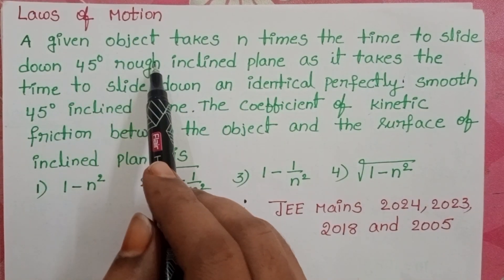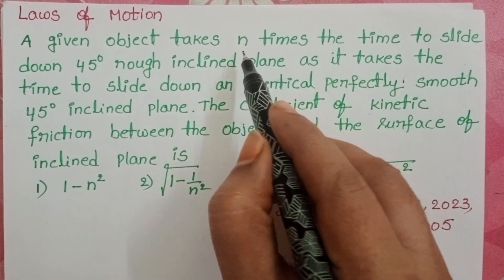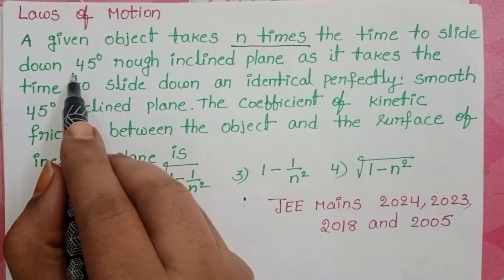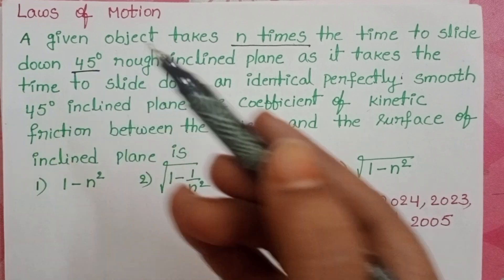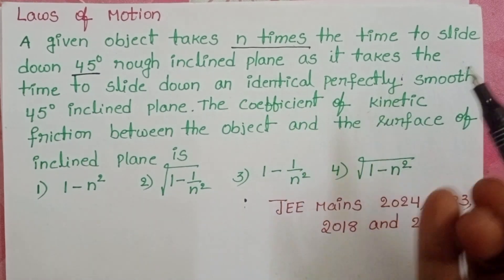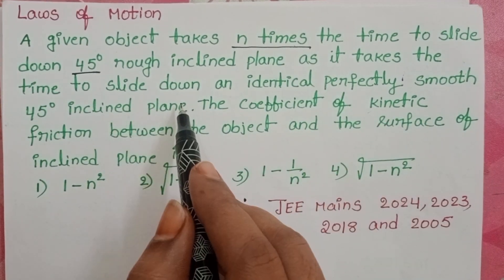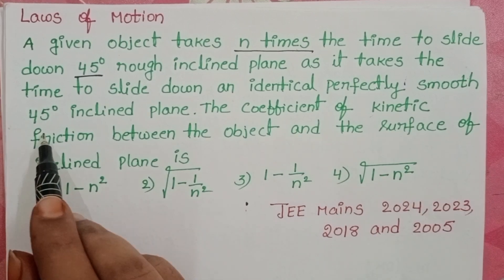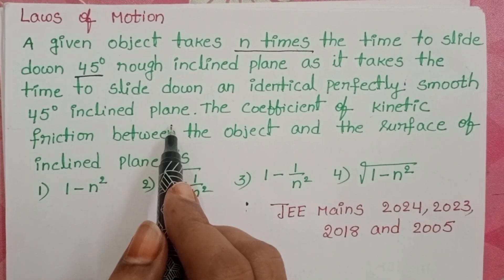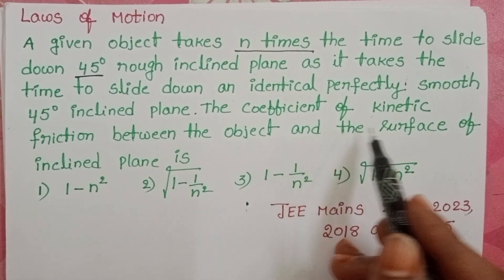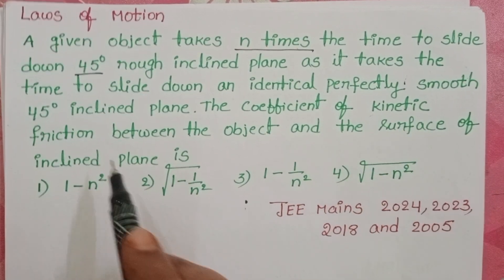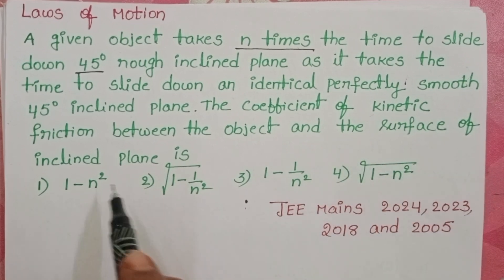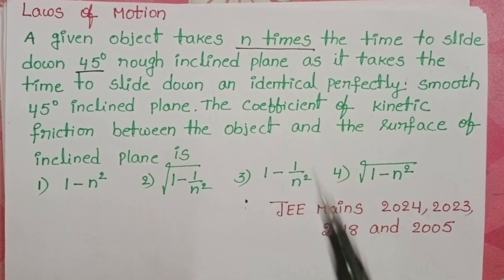A given object takes n times the time to slide down a 45-degree rough inclined plane as it takes to slide down an identical perfectly smooth 45-degree inclined plane. The coefficient of kinetic friction between the object and the surface of the inclined plane is to be determined.